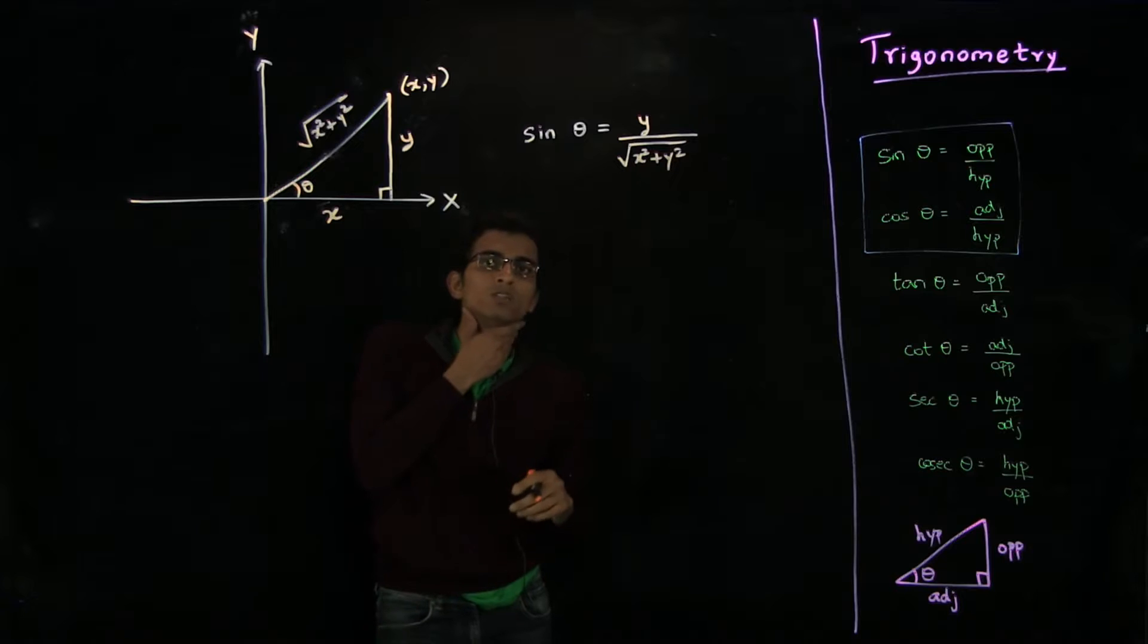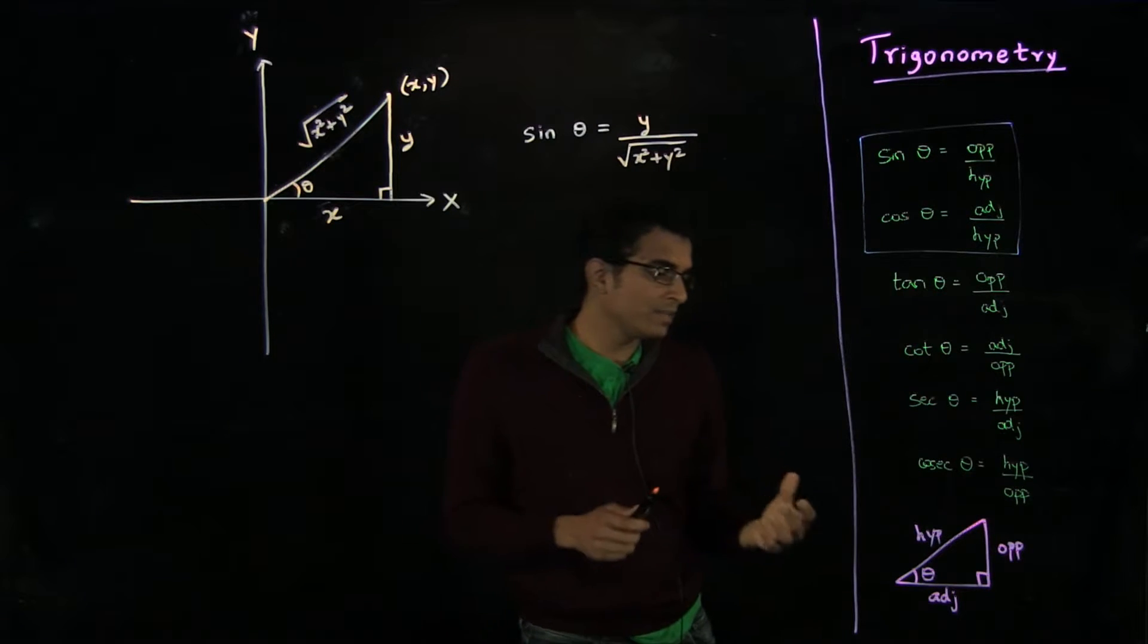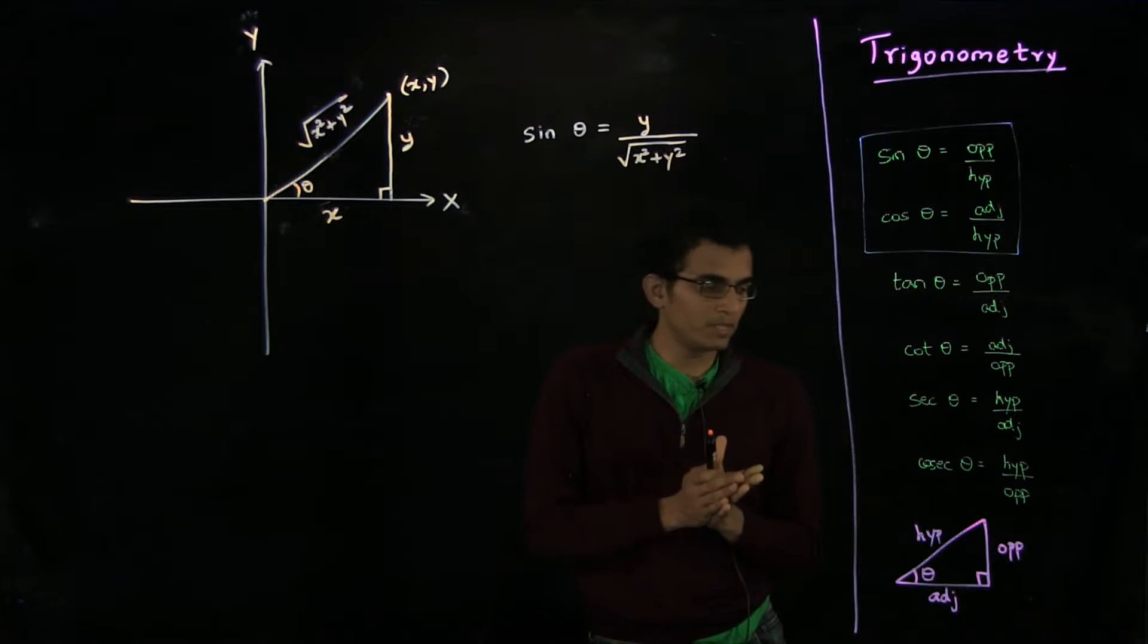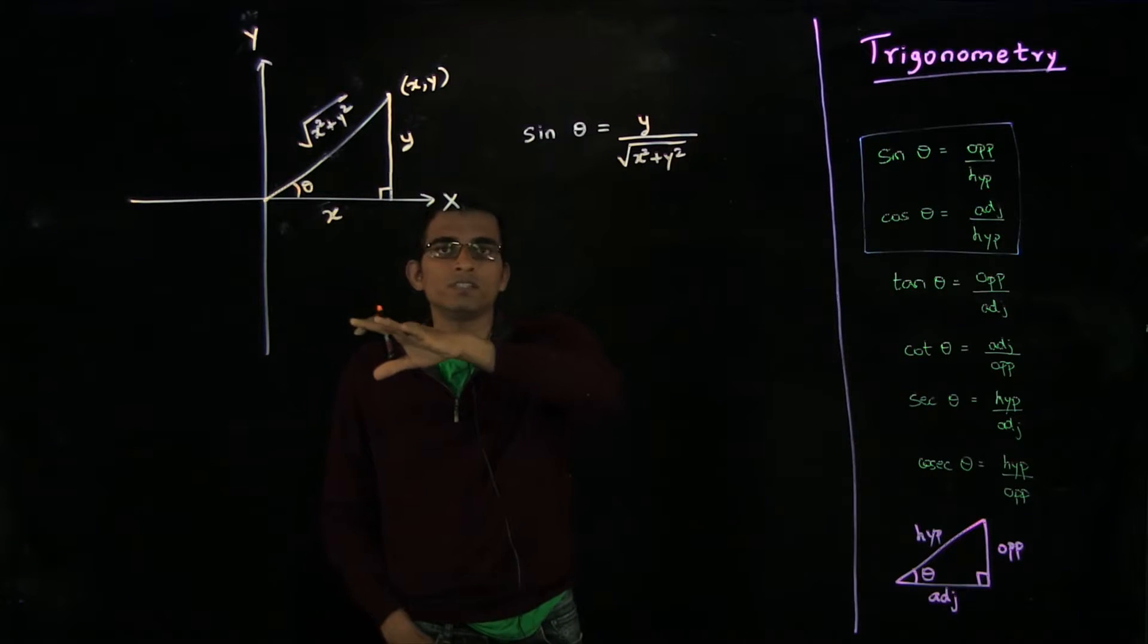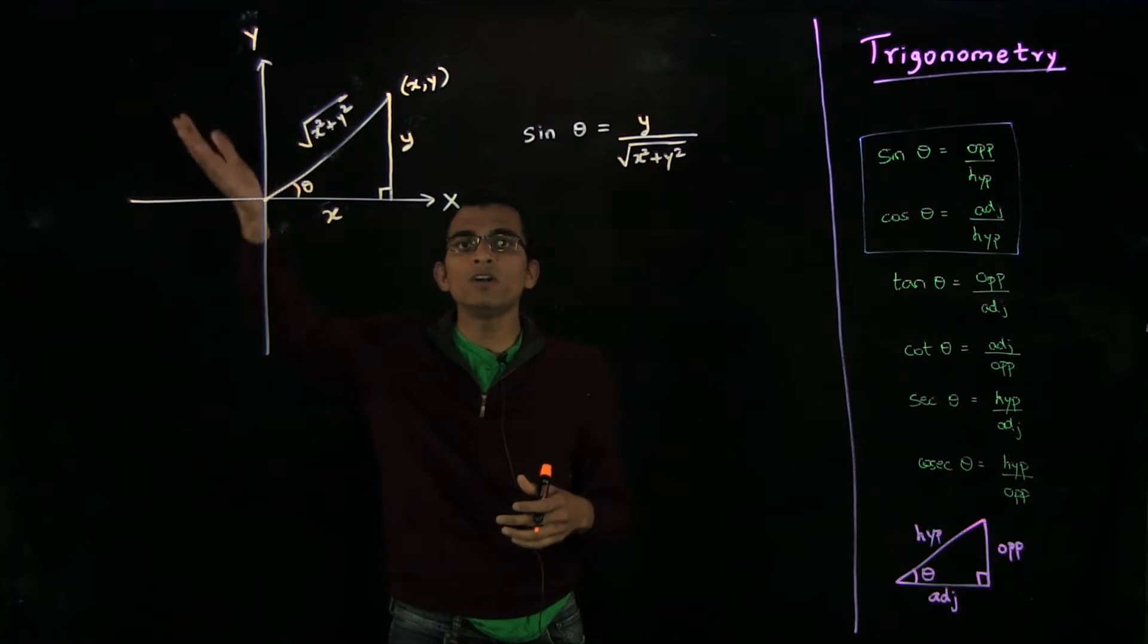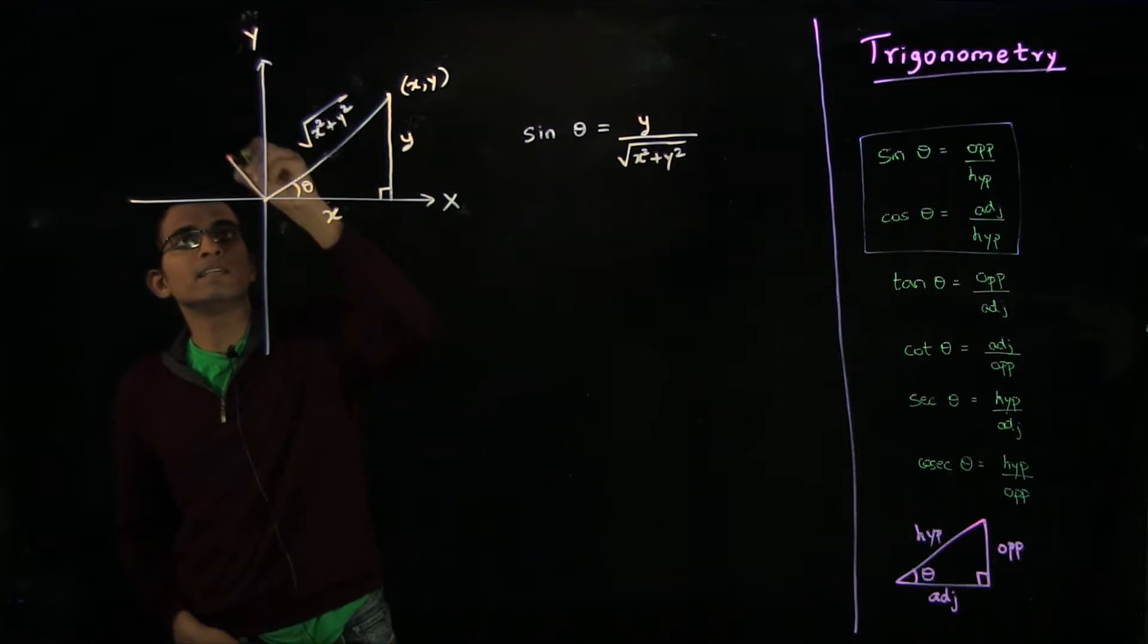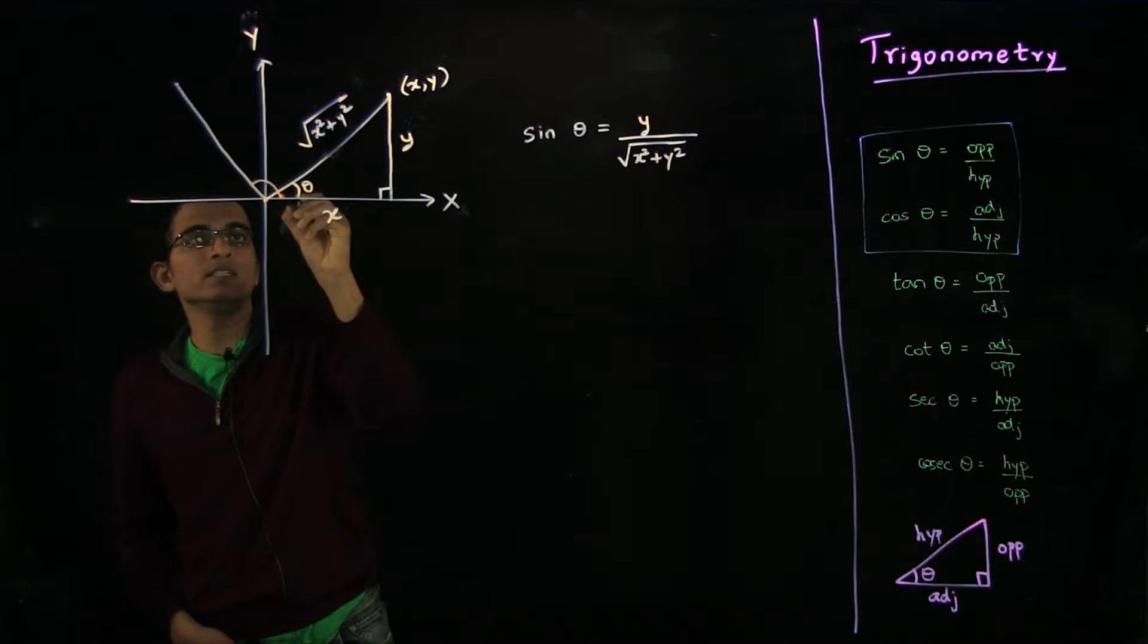And now once we have defined it this way, we are no more bound by being constrained between 0 and π/2. Here now we can extend this definition to angles which are even beyond π/2. So for example, let's take an angle like this, maybe this angle is 2π/3.